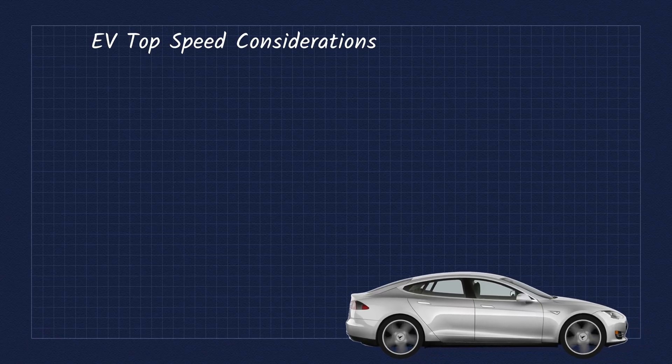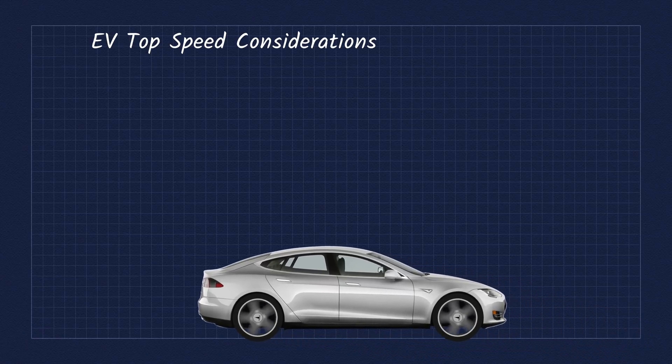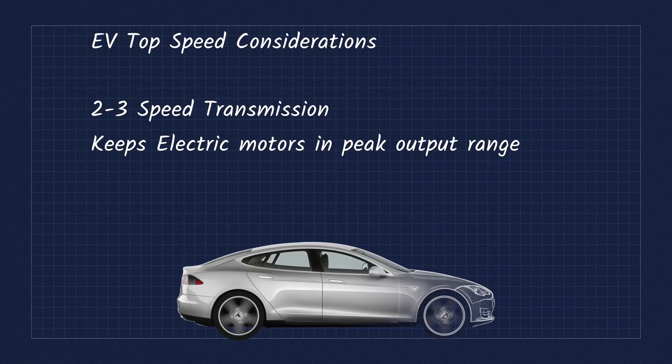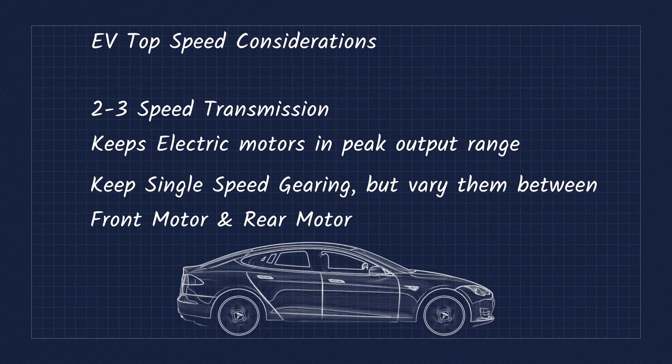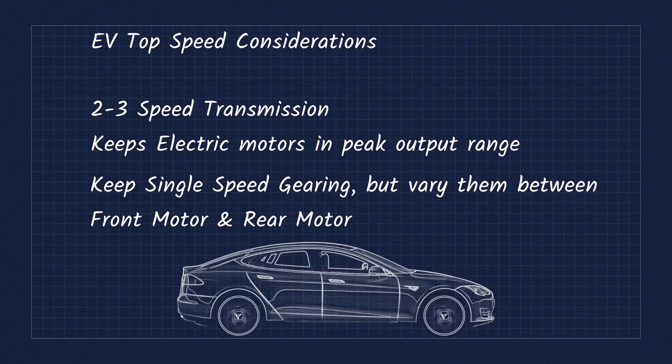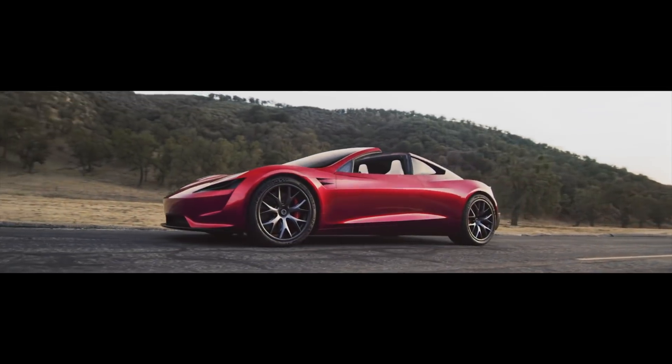You might be thinking this sounds like an EV flaw, but there's actually a decent solution to this. Just get a two or three speed transmission, or better yet, have one fixed gear ratio for the front motor and a different one for the back. This might very well be what Tesla will do for their 2020 Roadster.